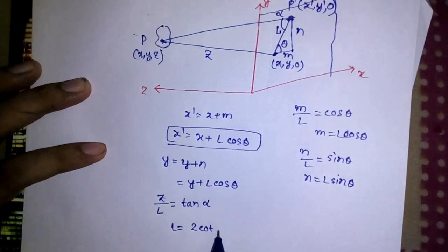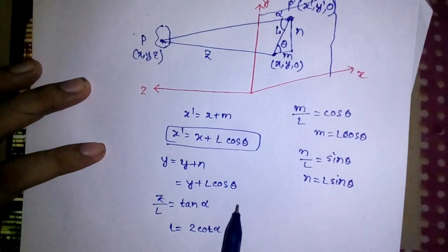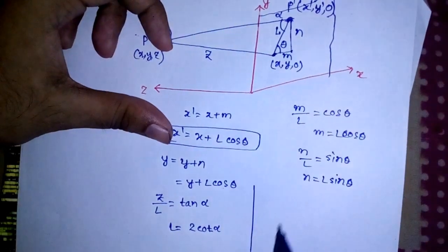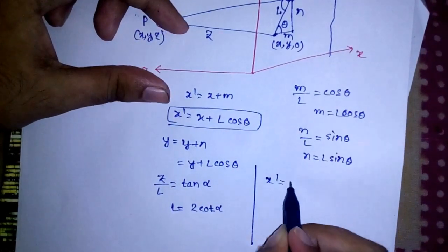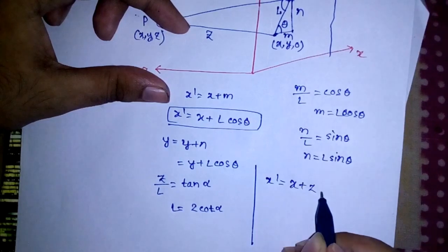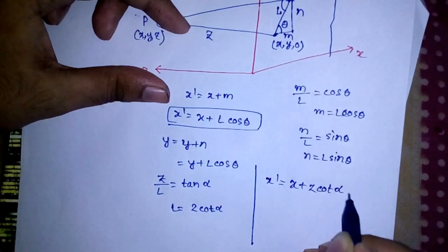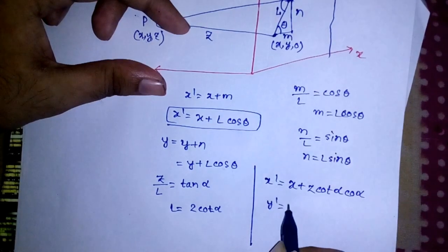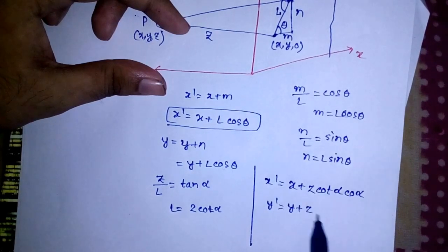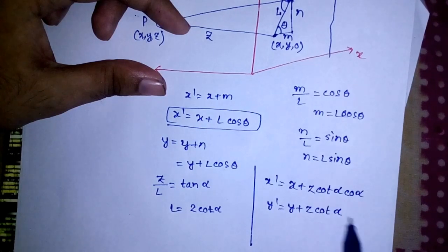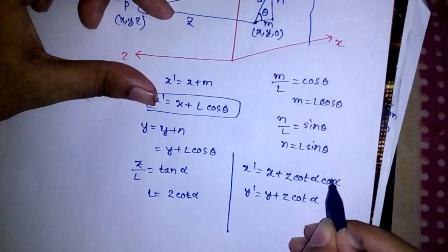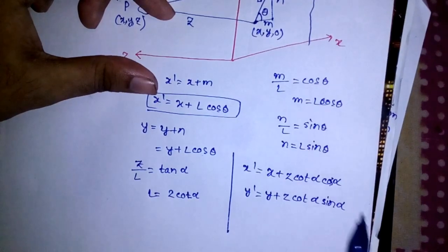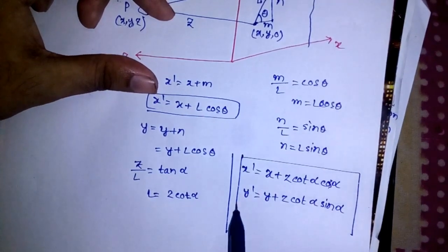Z by L is actually tan alpha, so L will be Z cot alpha. I can put the value of L in both of these. So X dash will be X plus Z cot alpha cos theta, and Y dash will be Y plus Z cot alpha sin theta. We are done with this.